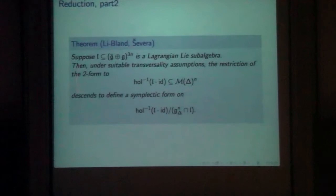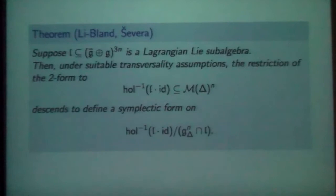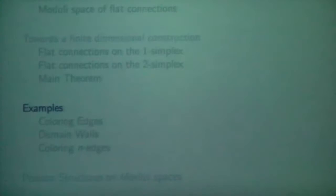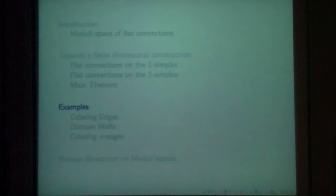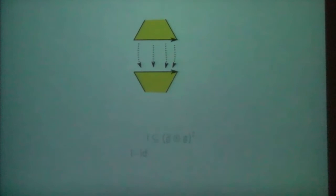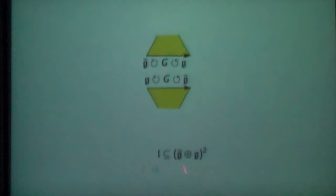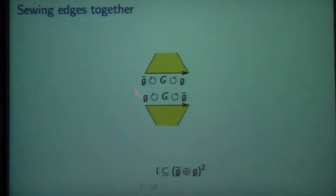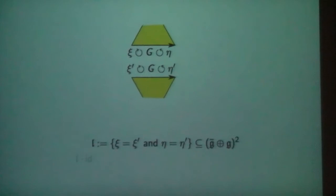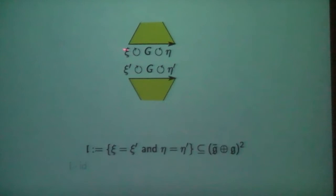So we can get symplectic structures by using this reduction procedure. I have to show that we can get the symplectic structure of a moduli space, which means I have to show how to choose the Lagrangian subalgebra. I'm going to do that next with a series of examples. The first example is just sewing edges together. Suppose I want to take two triangles and sew two edges together — I need to choose a Lagrangian subalgebra to do that by.